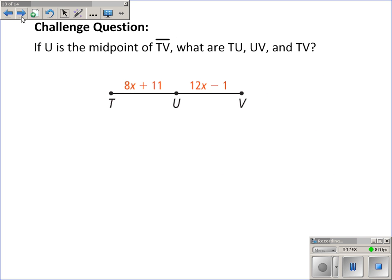I think we have time for one challenge question. Let me just set this up. We're kind of getting low on time. But if U is the midpoint of segment TV, what is the length of TU, UV, and TV? I think we'll have time just to set this up. And then if you want to solve it, you can. But I think there's something like this on the homework. So if U is in the very middle, it must be that this part is congruent to this part. We use dashes to say that. In other words, that 8x plus 11 must be equal to 12x minus 1.